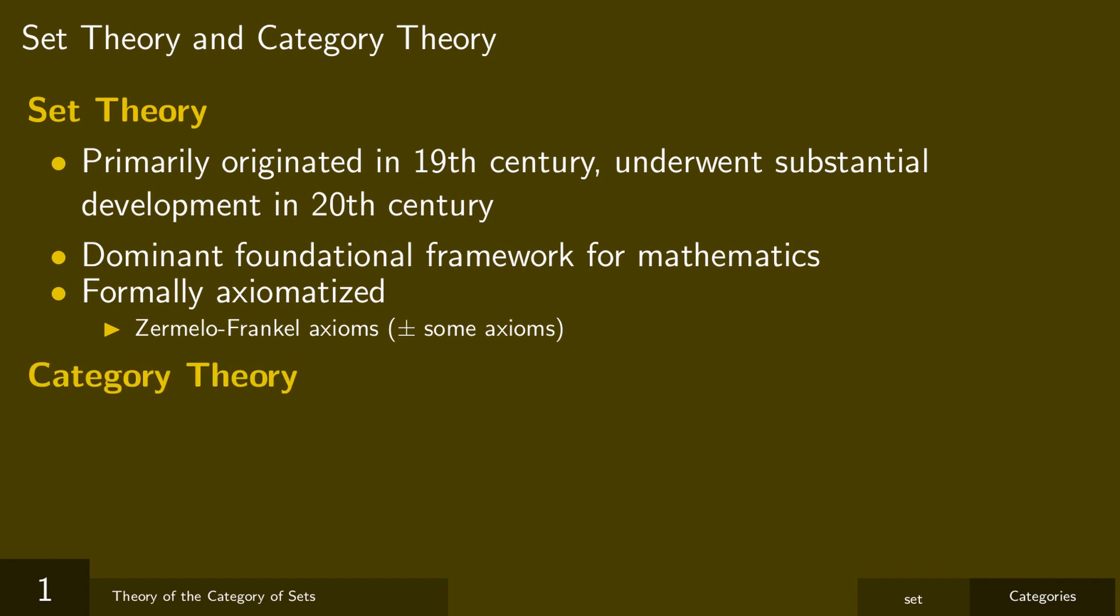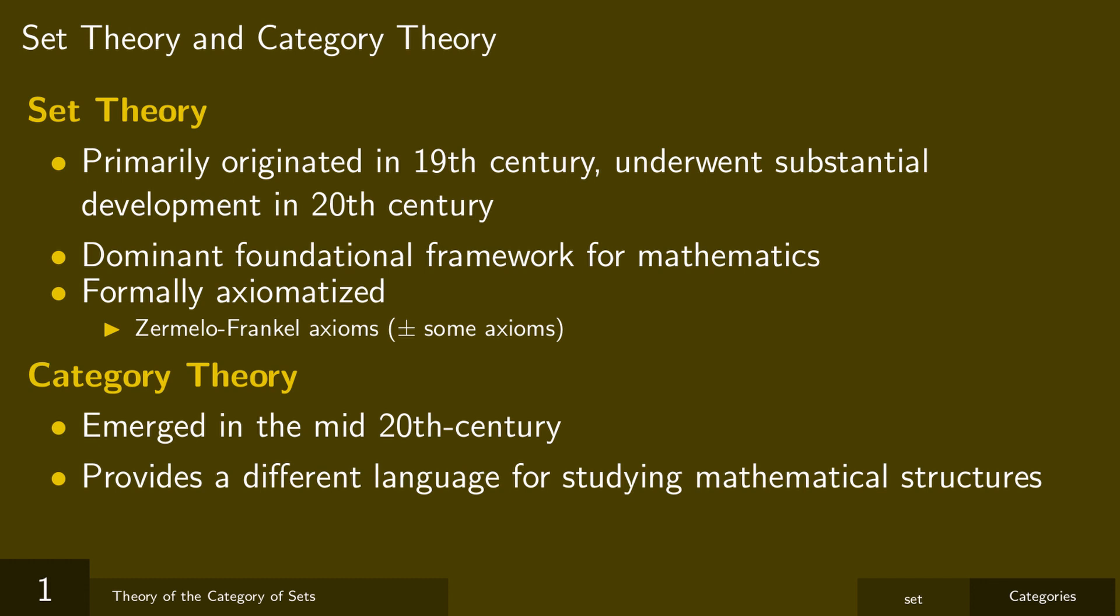Category theory is another branch of mathematics which also has these foundational ambitions. Category theory emerged in the 1940s and came into its mature form through the 1950s and 60s, and it's continued to expand and develop since. Category theory doesn't contradict set theory, but rather it views the same concepts and techniques from a different perspective. And category theory proves rich enough to serve as an alternative foundation for all mathematics.